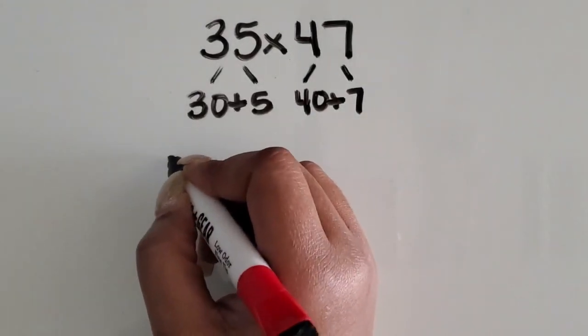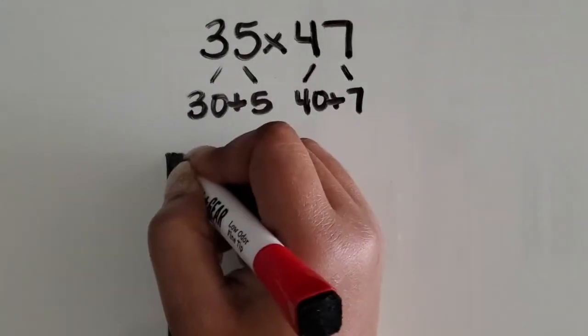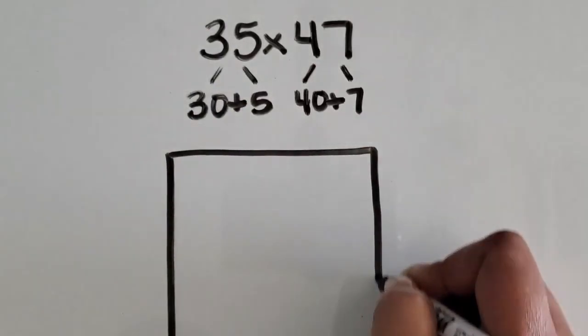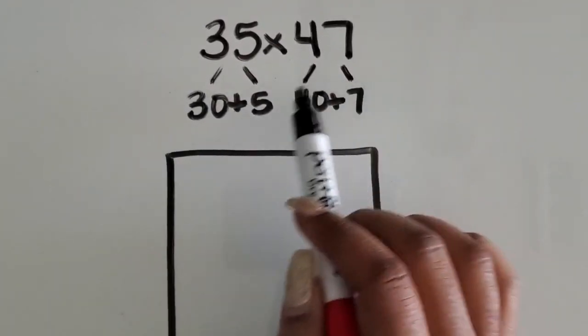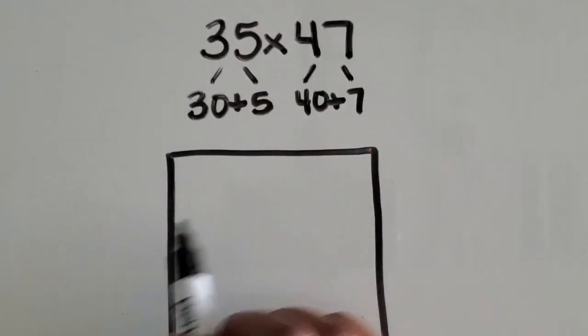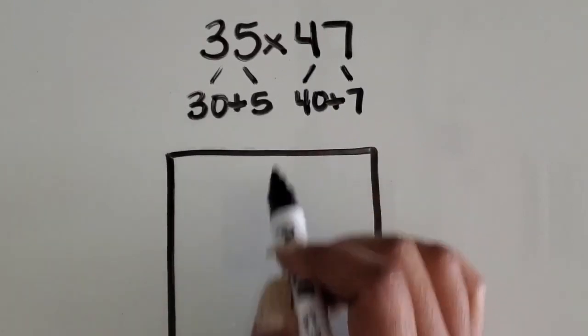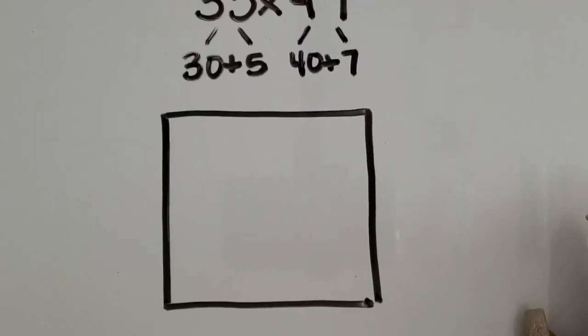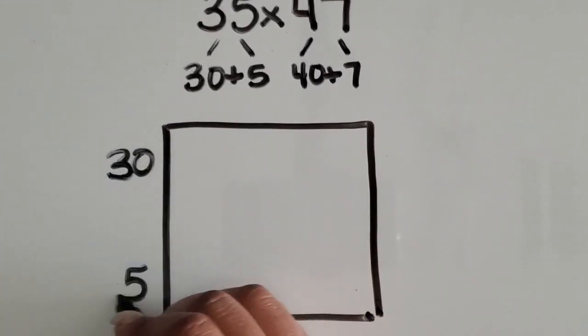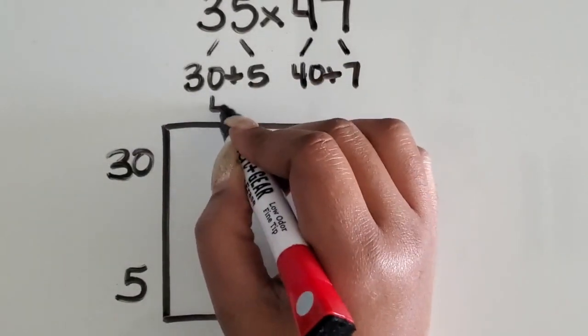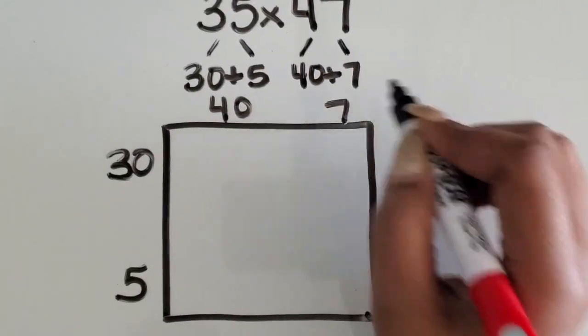Then we want students to draw their rectangle or more like a square and make connections knowing that, okay, I have four digits here and four digits here. They're going to be two parts going horizontal and two parts going vertical. So I'm going to write 30 here and then 5 here, 40 at the top, and 7 here.